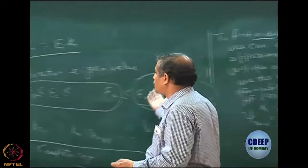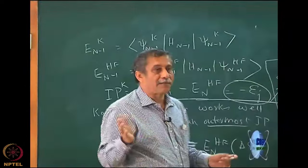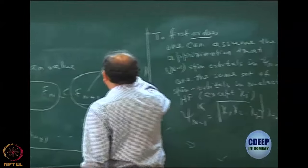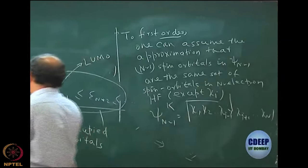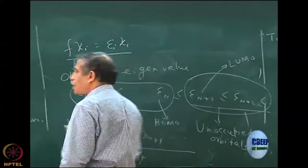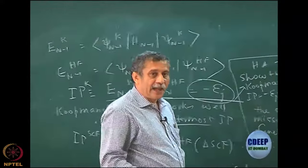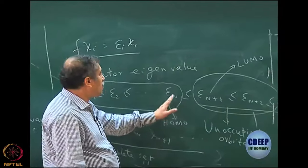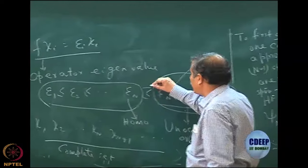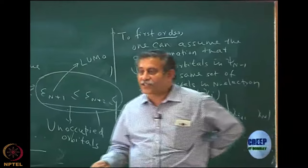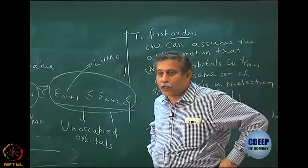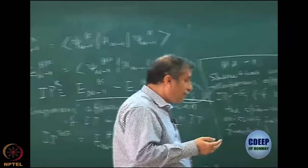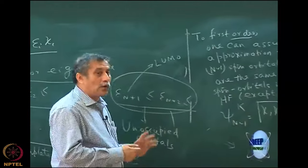So this is the first time we are defining what are called unoccupied orbitals. Through the canonical Hartree-Fock equation we have many orbitals; in principle the number is infinity. N of them are used in Hartree-Fock — they are called occupied orbitals. The rest are all called unoccupied orbitals, and usually they will have higher orbital energy. The lowest of the unoccupied orbitals is called the LUMO, and the highest of the occupied orbitals is called the HOMO. They have very interesting chemistry because the energy difference can be very small or large.